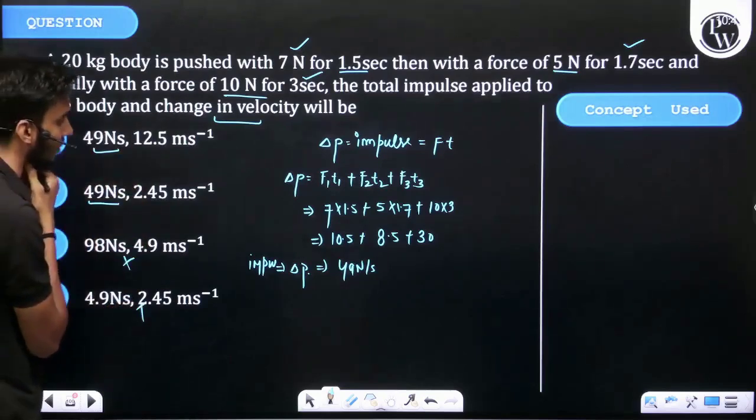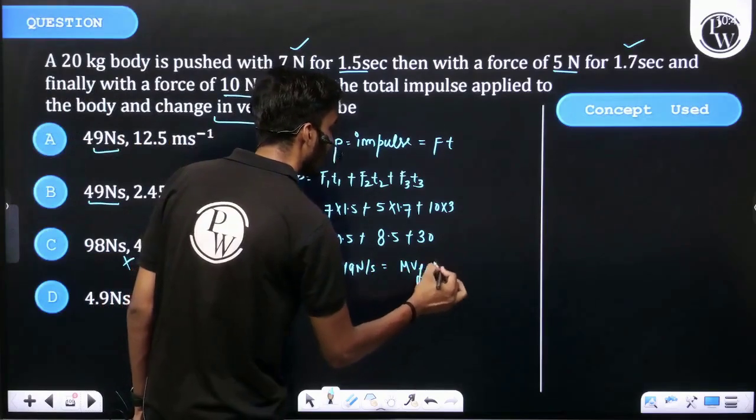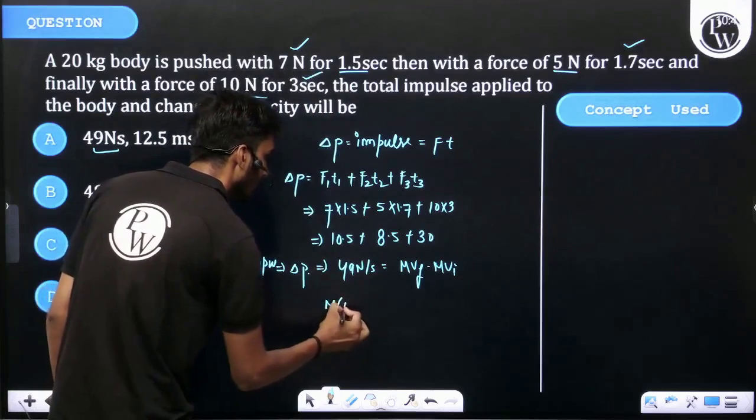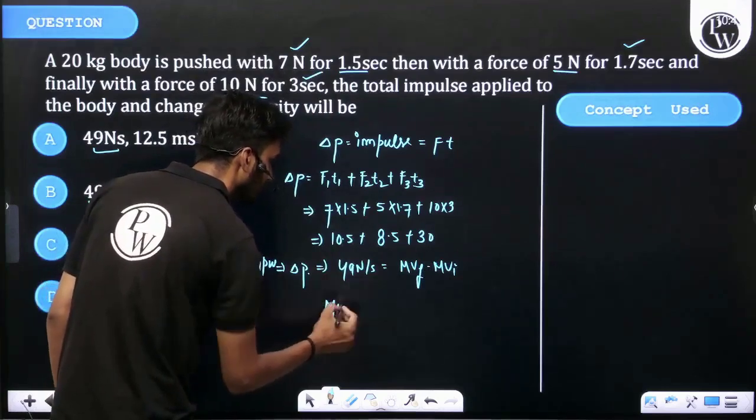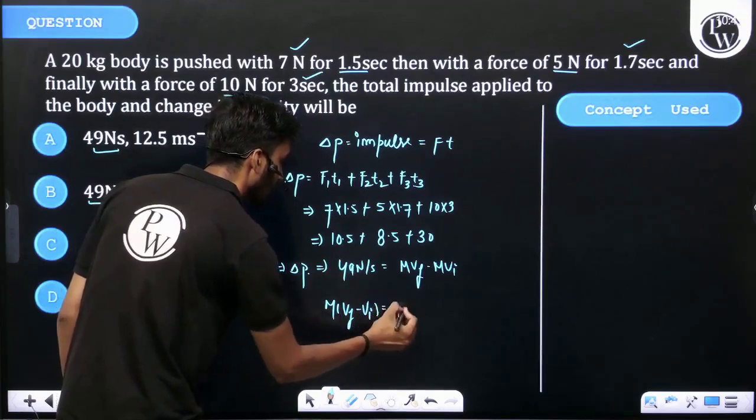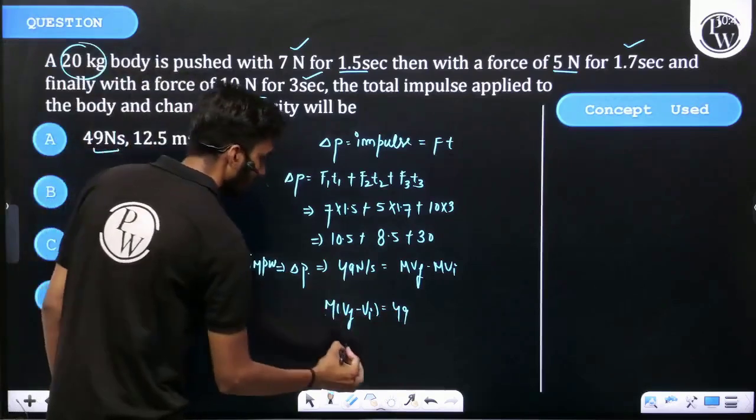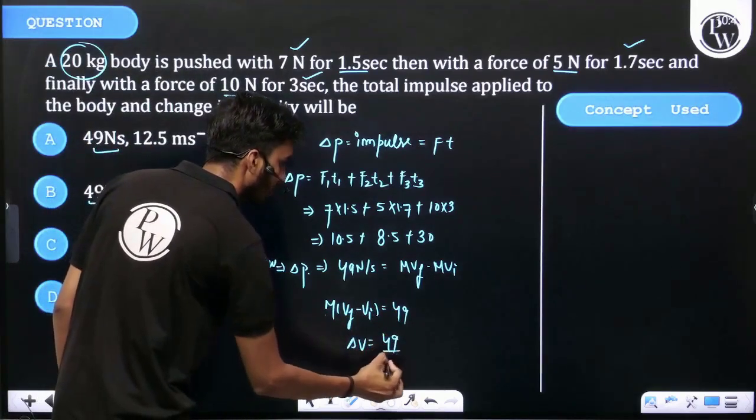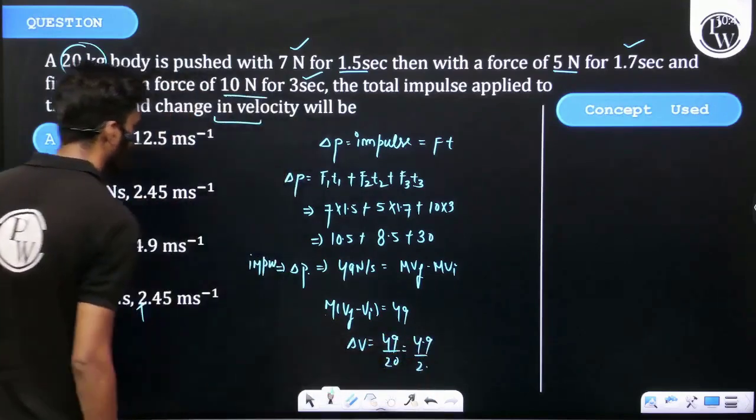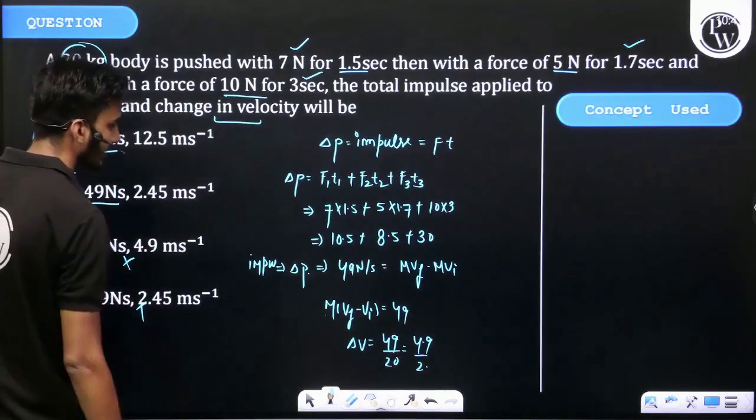Let's find change in velocity. Change in momentum is equal to M V final minus M V initial. Taking M common, V final minus V initial is equal to 49, and the value of M is 20 kg. Then change in velocity is 49 divided by 20, that is 4.9 divided by 2, that is 2.45 approximate. Alright, then option number B is correct.